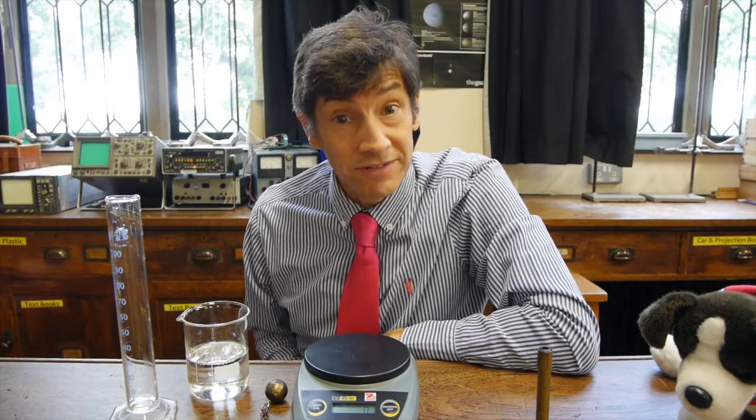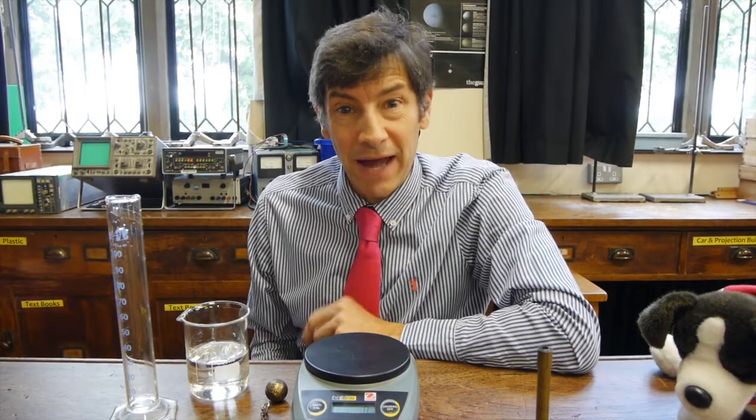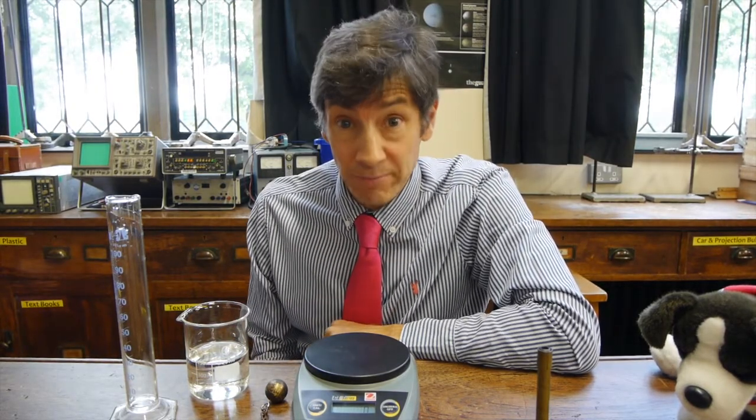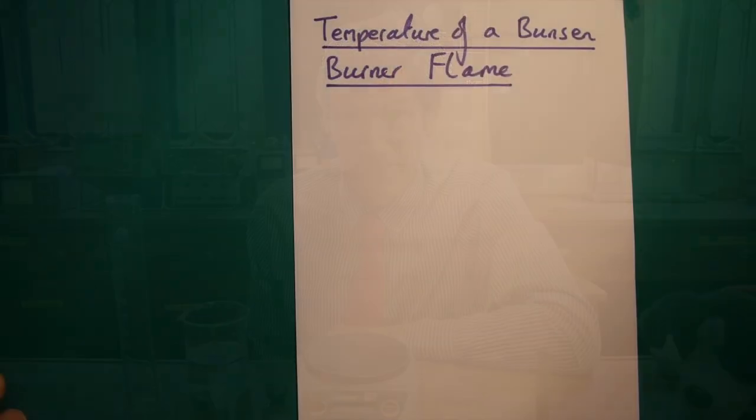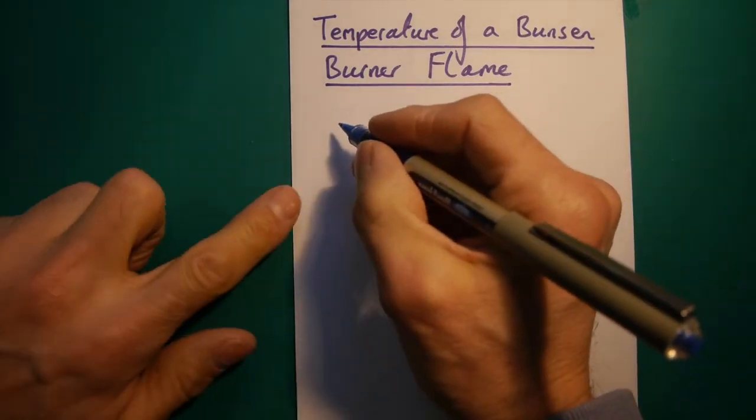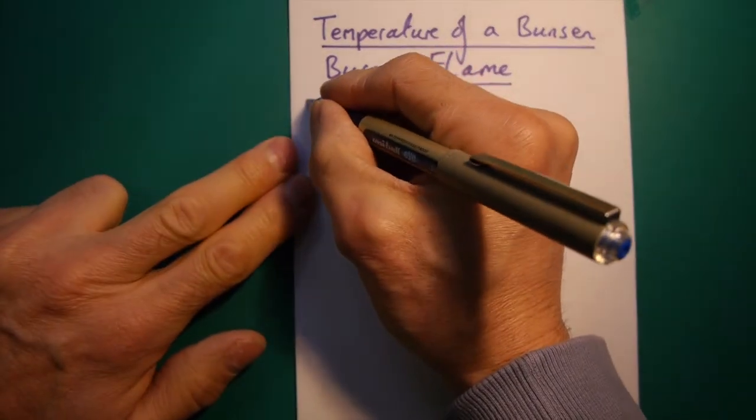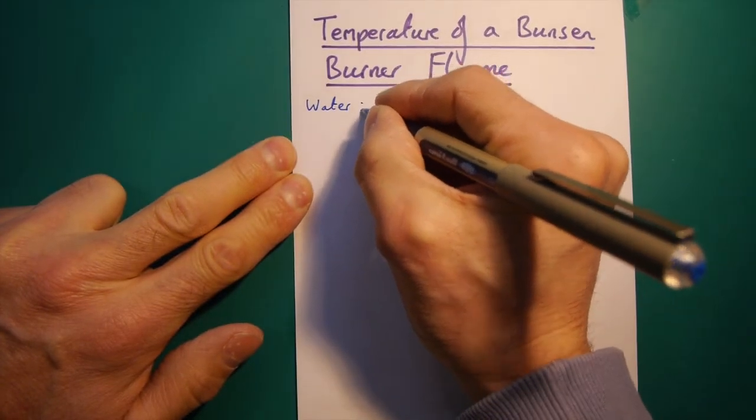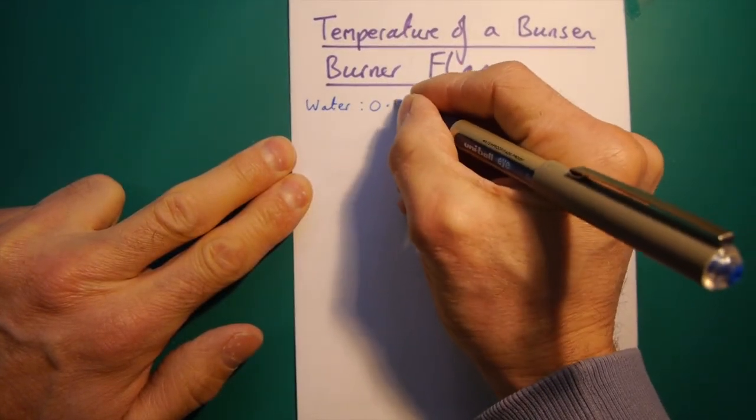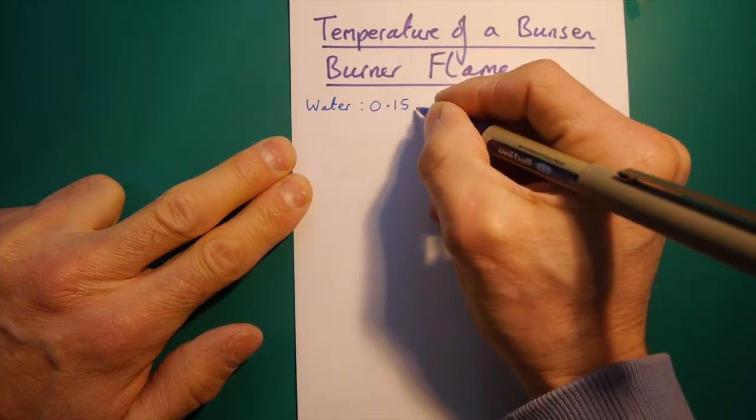So, now we've got all our data, we just need to do a little bit of maths to determine what the temperature was of our Bunsen flame. Okay, so let's now try and work out the temperature of our Bunsen flame. We'll remind ourselves of the data that we had. So, the water that we worked with had a mass of 0.15 kilograms.